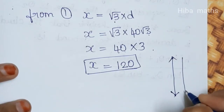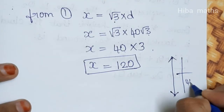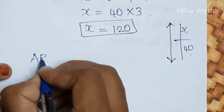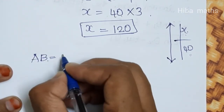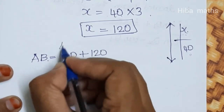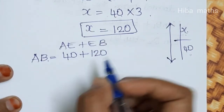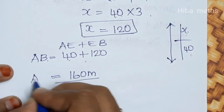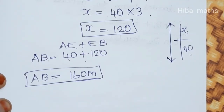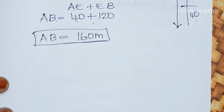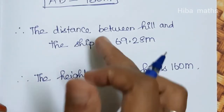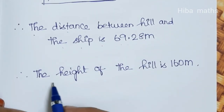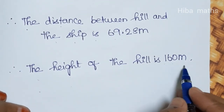Now we want the full height of the hill. The total height AB equals AE plus EB, which is 40 plus 120 equals 160 meters. So the height of the hill is 160 meters. Thank you so much for watching.